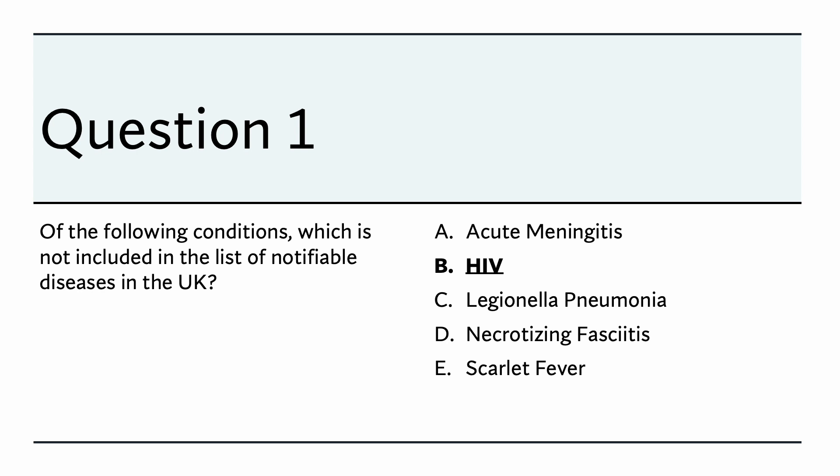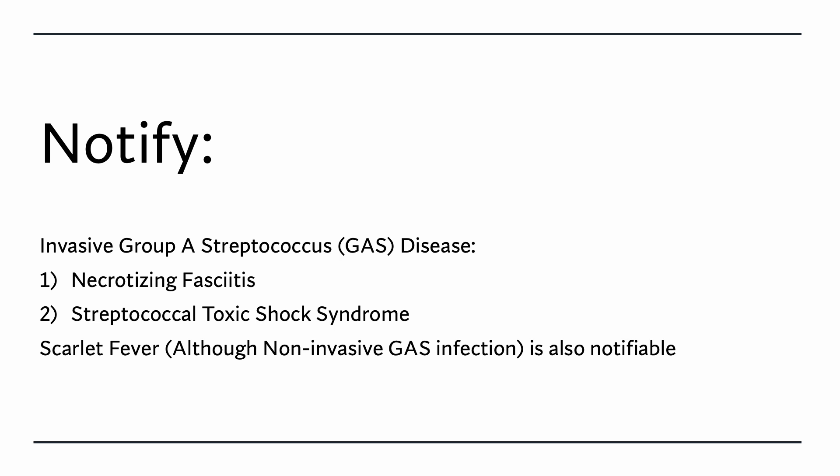Remember, you need to memorize the notifiable diseases in the UK. Meningitis is a notifiable disease — you have to inform Public Health England even if you suspect meningitis. Legionella pneumonia is another notifiable disease. Necrotizing fasciitis and scarlet fever are notifiable as well. Group A streptococcus causes these conditions — necrotizing fasciitis and streptococcal toxic shock syndrome are called systemic Group A infections. Scarlet fever, although non-invasive, is also a notifiable condition, as seen in the recent epidemic in the UK.